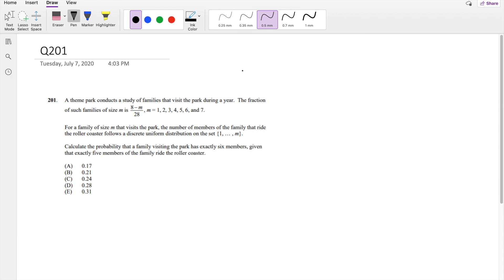Okay, I assume you already did it, let's just dive right in. So they're asking you to calculate the probability that a number of families visiting a park has exactly 6 members.